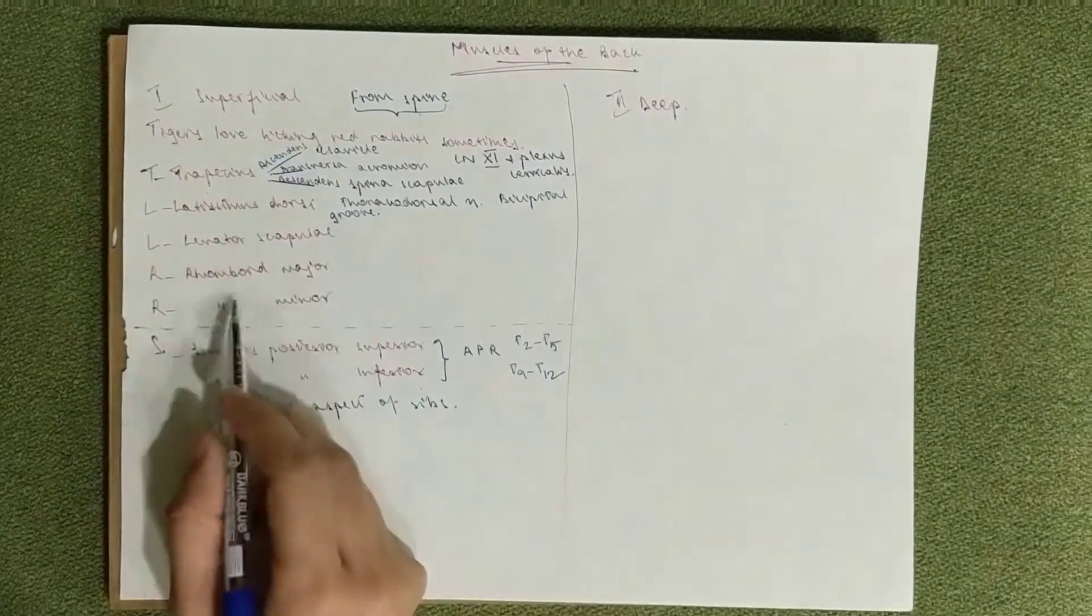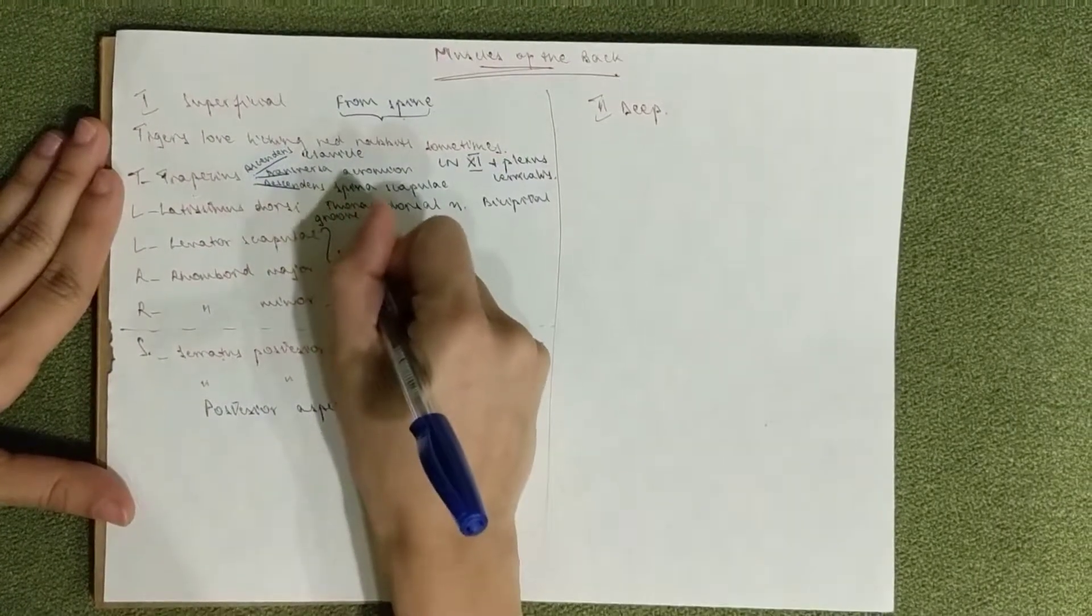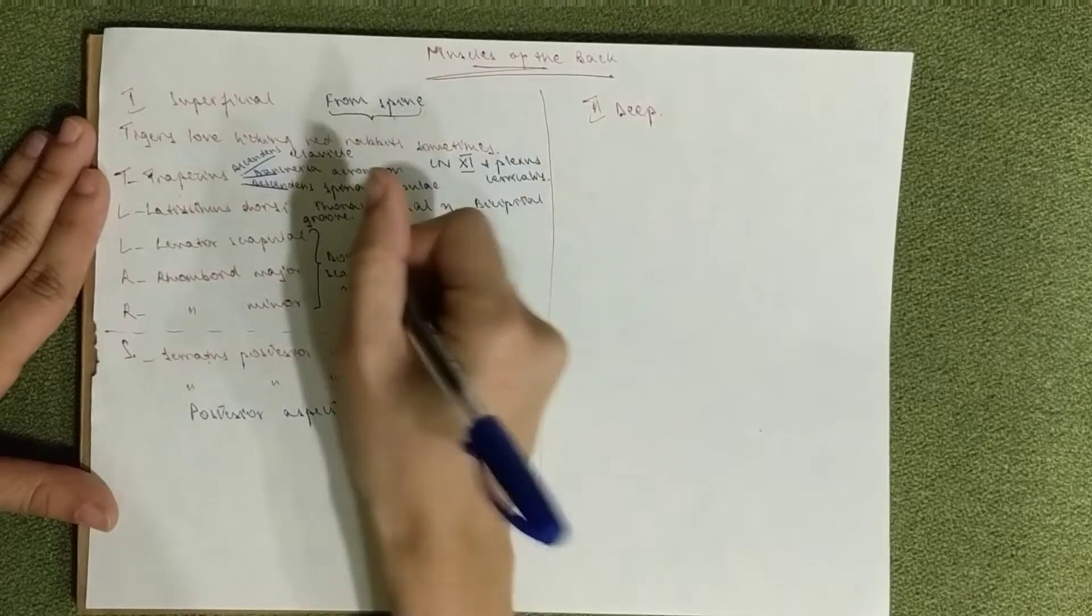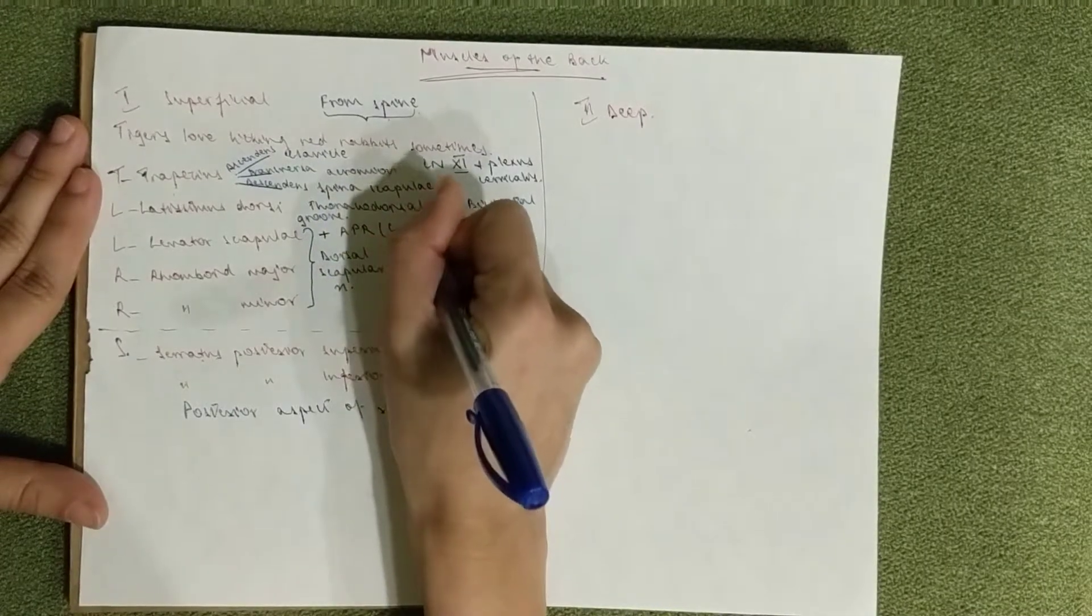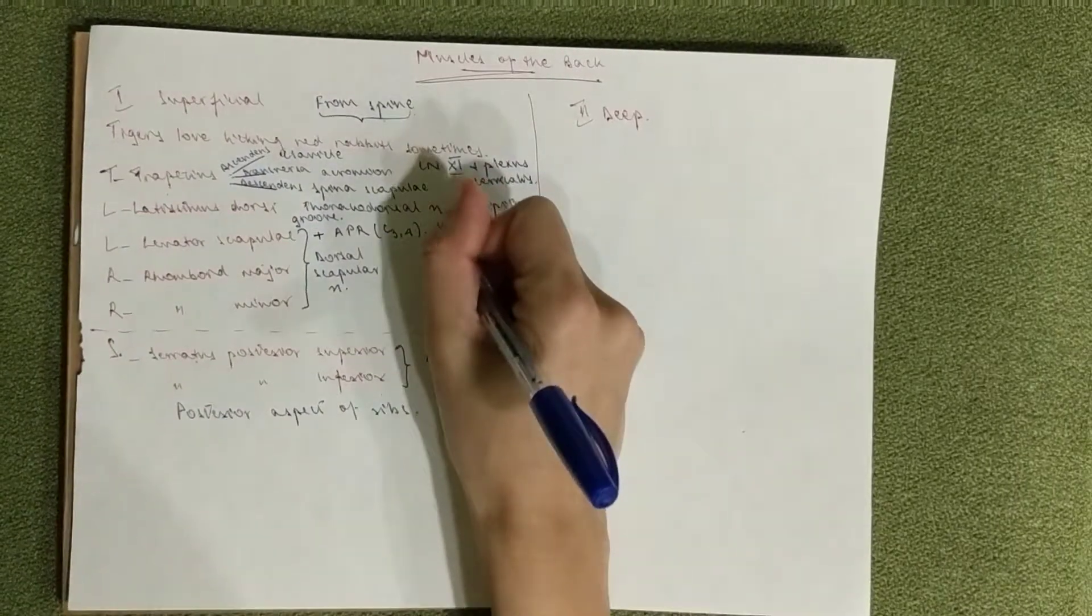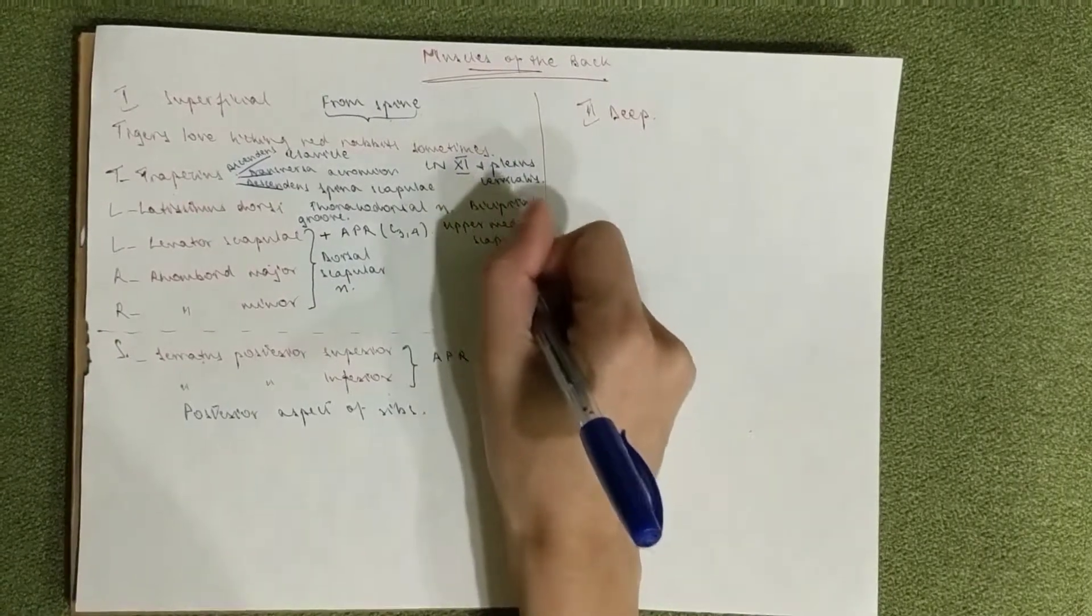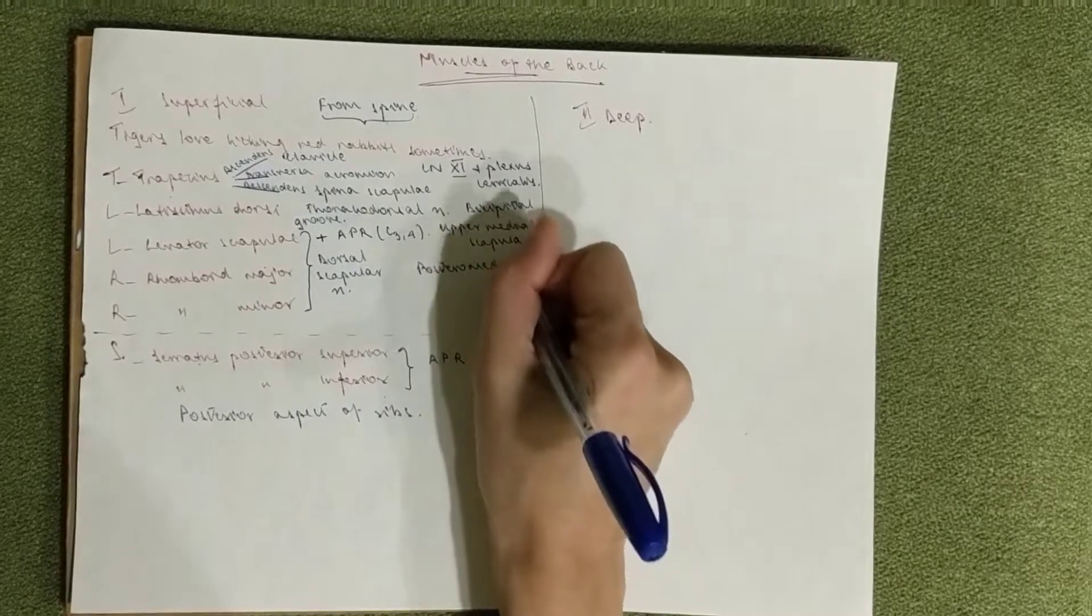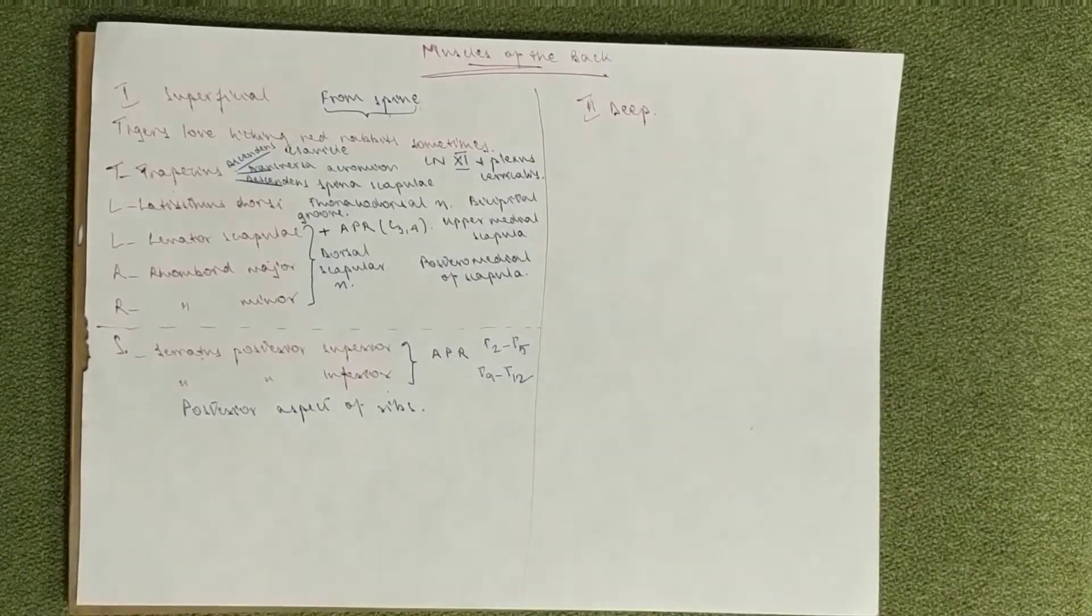The levator scapulae, rhomboid major, and rhomboid minor are innervated by the dorsal scapular nerve. The levator scapula is also innervated by the anterior primary rami of C3 and C4. The levator scapulae goes from the upper medial border of the scapula, while the rhomboids go from the posterior medial borders of the scapula. That is it for the superficial.